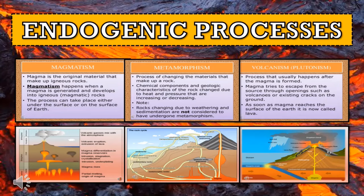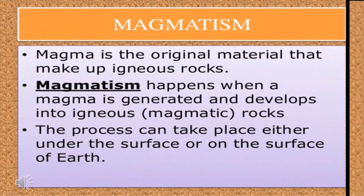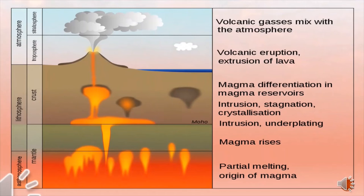Here are some endogenic processes that played a role in the evolution of landforms on Earth. The first is magmatism. Magma is the original material that makes up igneous rocks. Magmatism happens when magma is generated and develops into igneous or magmatic rocks, either under the surface or on the surface. The process starts from the partial melting of rocks, then the magma moves by internal heat through convection flow. When magma reaches the lithosphere, it solidifies into intrusive igneous rocks due to the sudden decline of temperature.